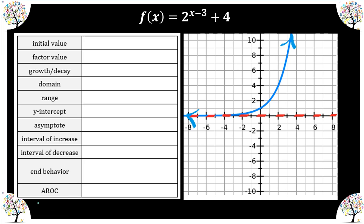Here is our parent function: y = 2^x. We see that we have a couple of transformations. I'm going to take three points from my parent function and transform each of these points.